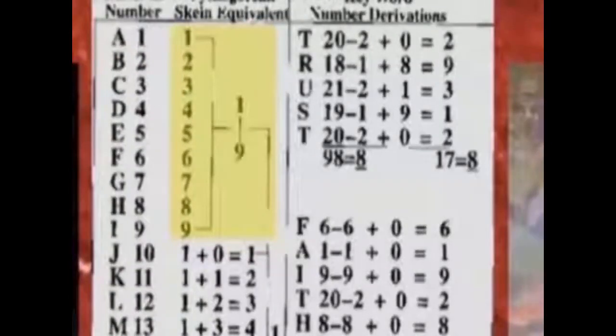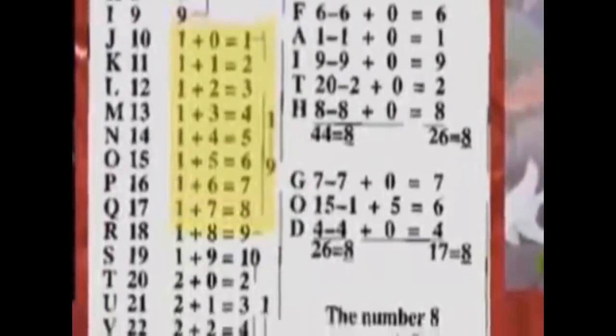You take one through nine. Ten is one plus zero, that's one. Eleven is one plus one, that's two. One through nine, one through nine, one through eight. Then he took the words faith, trust, and God. Isn't that interesting? He noted they're all eights, the infinity sign, God's number.